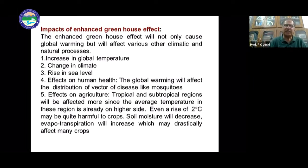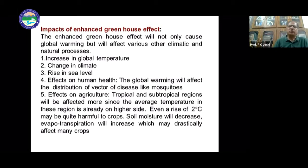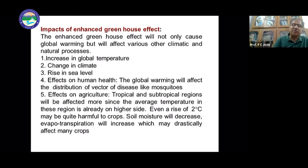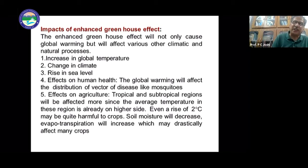Global warming will affect the distribution of disease vectors. For example, in Germany, many years ago there were no mosquitoes because the climate was unsuitable for them. But now, due to climate change and global warming, mosquitoes — which are vectors for malaria — can survive there, and malaria cases are being reported in places where they were not reported earlier.